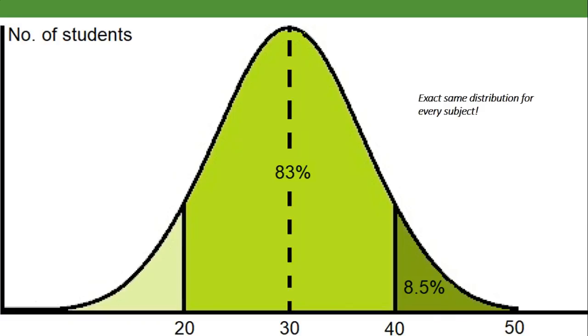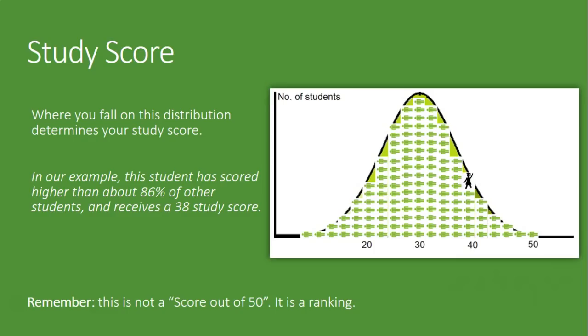Where you fall on that distribution, where your ranking sits, tells you what study score you're going to get. So in our example, this student might be ahead of 86% of the other students. We count backwards through the distribution to get 86%, and we say okay, that puts her at a 38. Just remember, it's not a score out of 50; it's a ranking.